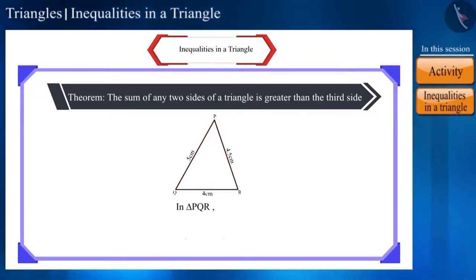We can say for triangle PQR that the sum of sides PQ and QR is greater than side PR. The sum of sides PQ and PR is greater than side QR.